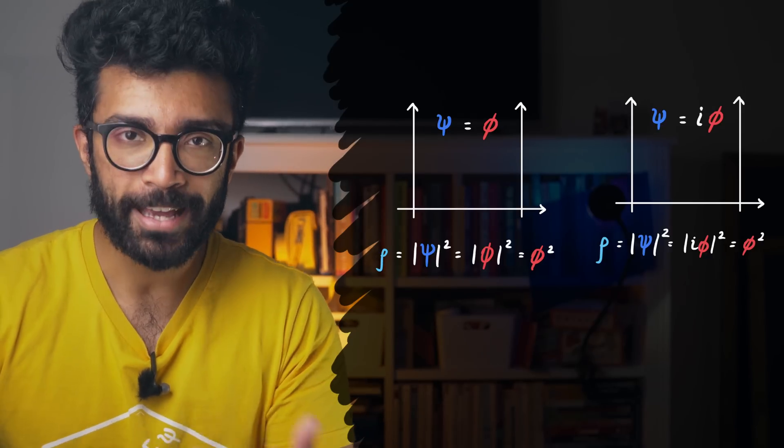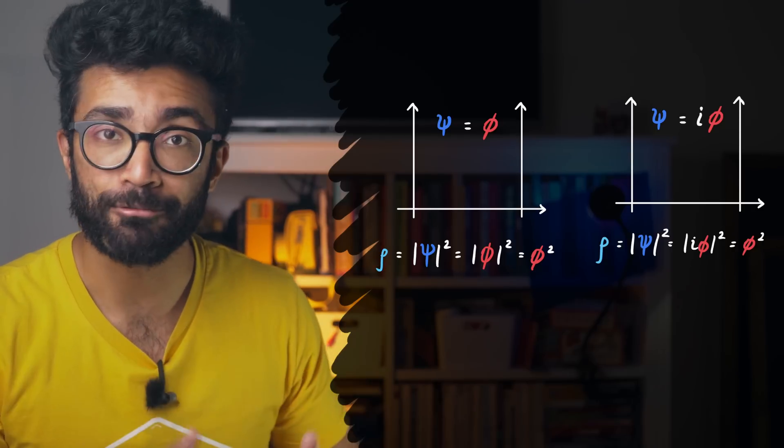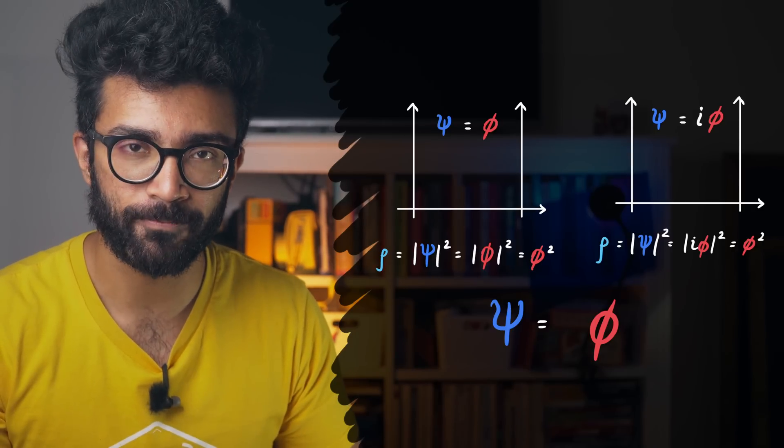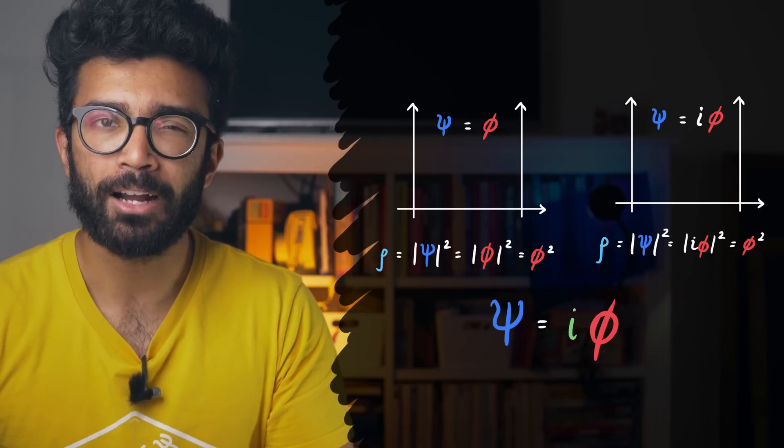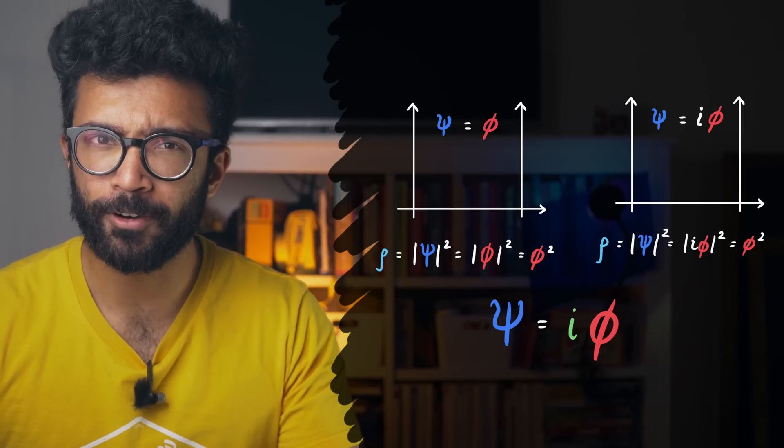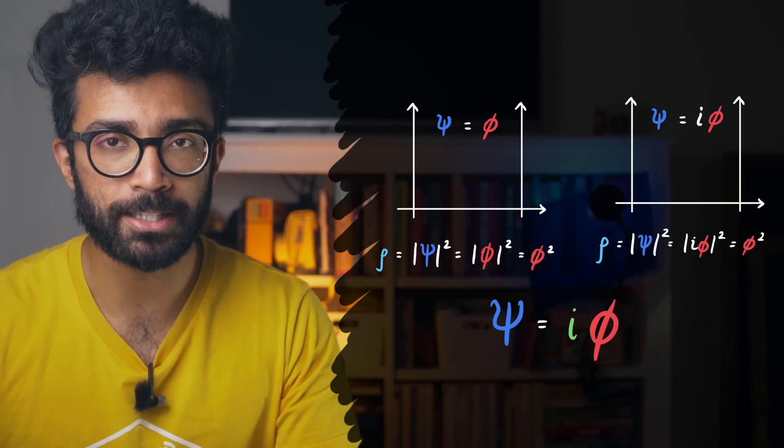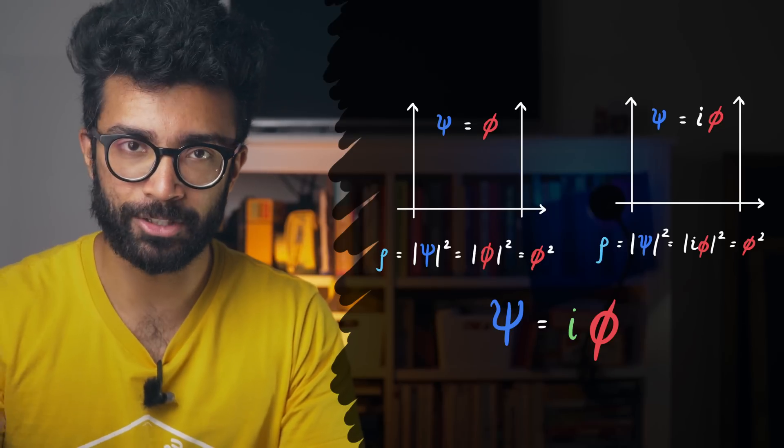But again, why should we care? After all, we can't directly measure the wave function. We can only measure the probability distribution. So how could we ever know that the wave functions of these two systems are different experimentally rather than just theoretically?